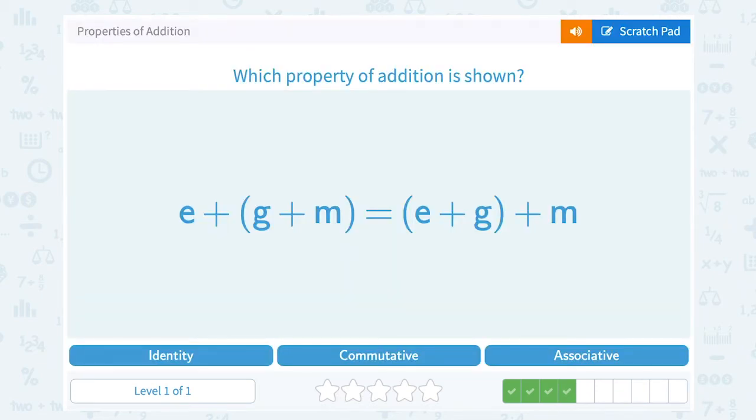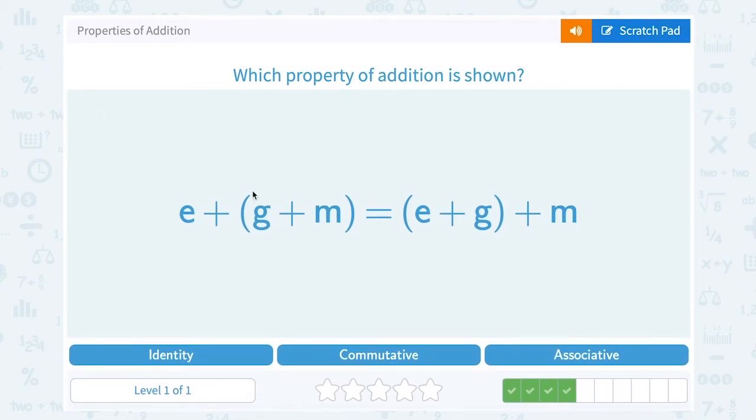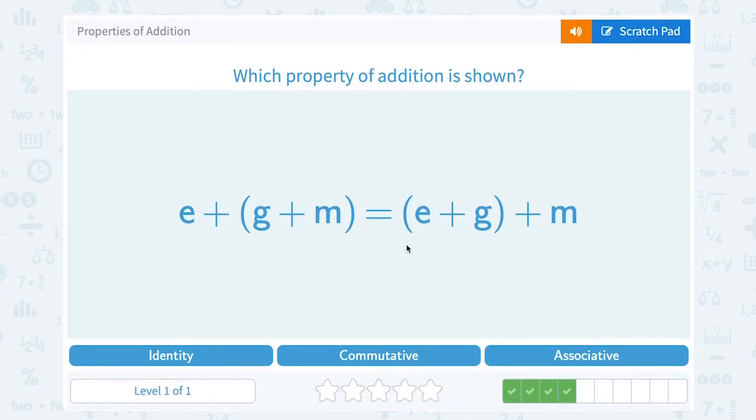This time we have E plus the quantity G plus M is equal to the quantity E plus G plus M. So the idea is that we can add in any order without changing the value. But notice instead of changing where the numbers are, they change the order by moving the parentheses. On the left this tells us to add G plus M first. On the right, these grouping symbols tell us to add E plus G first. When they change the order by changing the grouping symbols, that is the associative property.